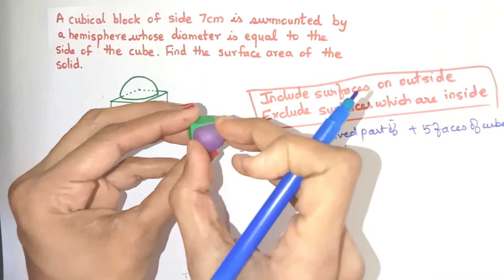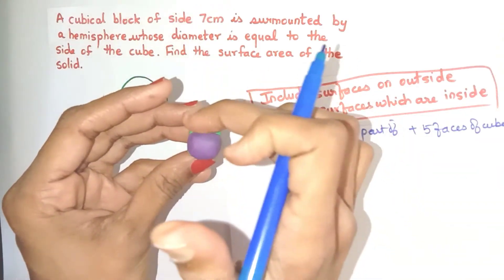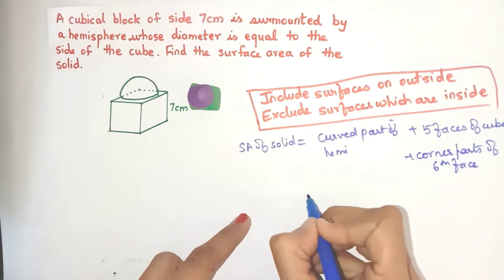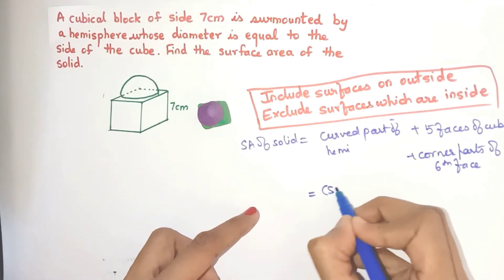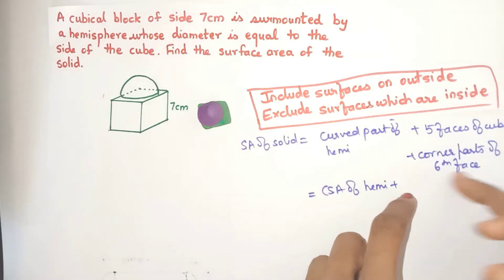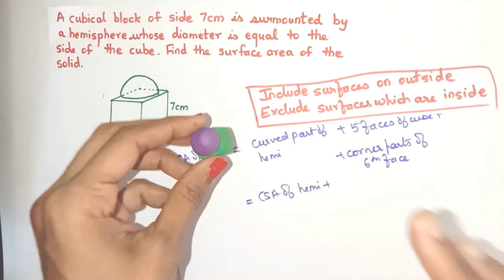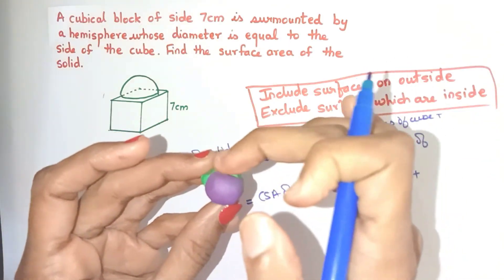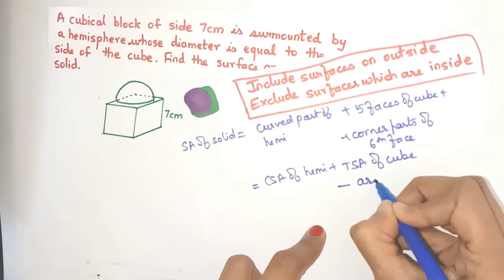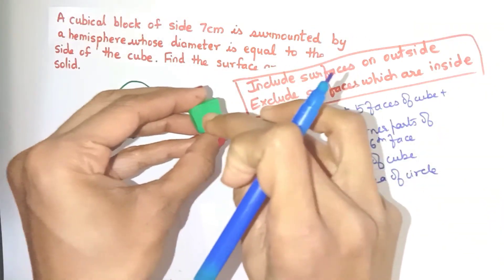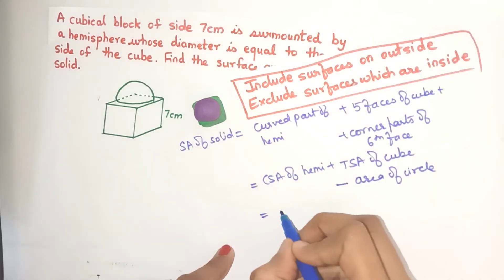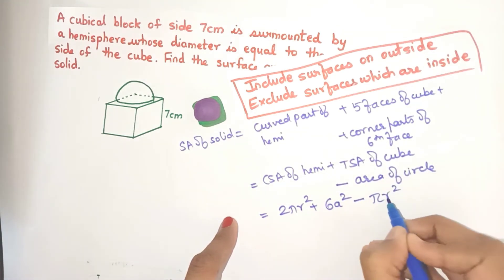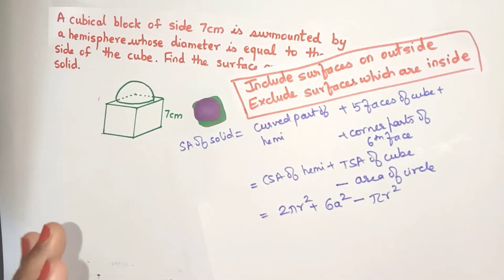Is the sixth face completely hidden by the hemisphere? No — the corner areas are still visible and outside, so we include the corner parts of the sixth face. The curved part of the hemisphere comes from the CSA formula: 2πr². There is no direct formula for the visible corner area, so we find the TSA of the cube, which is 6a², and subtract the circular area where the hemisphere is sitting, which is πr². So the formula is: 2πr² + 6a² − πr².